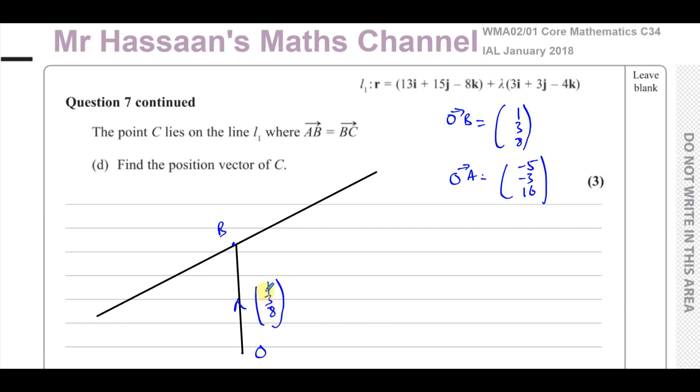Then it says the point C lies on line 1, where AB equals BC. So let's say this is A. We already found the vector from O to A, which is this vector over here. So we know the vector from O to A is minus 5, minus 3, 16. We were told that.